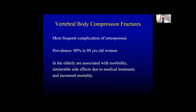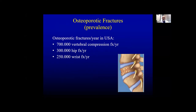The most frequent complication of osteoporosis, with the prevalence of fracture about 80% in 80-year-old women. In the elderly, these fractures are associated with morbidity, intolerable side effects, different medical treatments, and also increased mortality. The osteoporotic fracture per year in the US is about 700,000 vertebral compressions, about 300,000 hip fractures, and also about 215,000 wrist fractures. The vertebral compression fracture is the top of these fractures in the elderly.